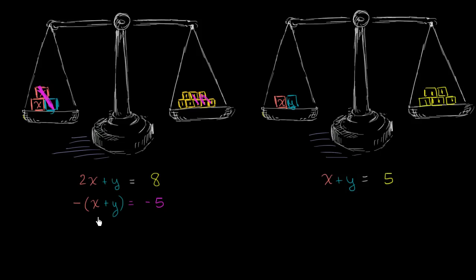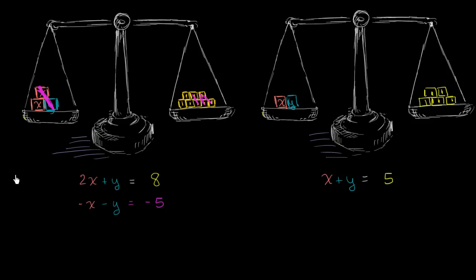On the left-hand side, we had 2x and take away one x — we're left with just x. We had a y and took away one y, so no y's remain. On the right-hand side, we had 8 and we know x + y equals 5, so we take away 5. That gives us 8 minus 5 equals 3. And just like that, using this extra information, we were able to figure out that the mass of x is equal to 3.